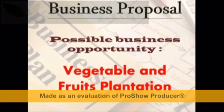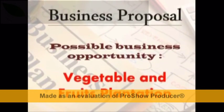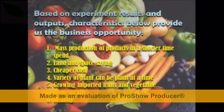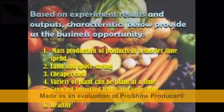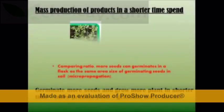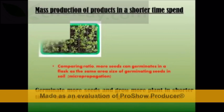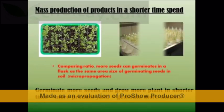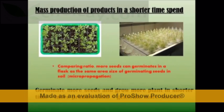With successful seed germination and plant hardening, it could provide business opportunities in the agricultural field of vegetable and fruit plantation, based on several key characteristics. Mass production in shorter time is the main characteristic. Using this technique, a higher ratio of in vitro culture flasks can yield more seed germination than the equivalent area of soil. Products can also be harvested in shorter time as optimum and controlled conditions are set to achieve high yield of production.